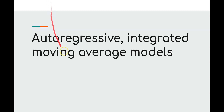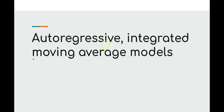So what do we mean by ARIMA models? ARIMA stands for autoregressive integrated moving averages. The first two letters, AR, stand for autoregressive; I stands for integrated; and MA stands for moving averages models. To understand this whole model, we first need to understand each component individually.